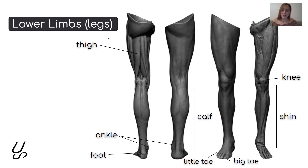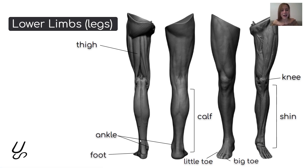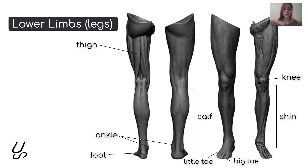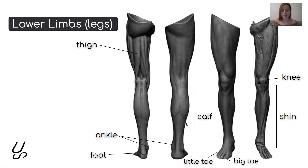Let's look at the lower limbs, or legs. The top of the leg is called the thigh. Here we have the joint in the middle of the leg, called the knee. The next joint is called the ankle. The front of the leg is called the shin, and the back of the leg is called the calf. The ankle connects the foot to the leg. Each foot has five toes — the smallest is called the little toe and the largest is called the big toe — and each toe has its toenails.